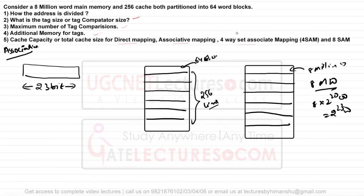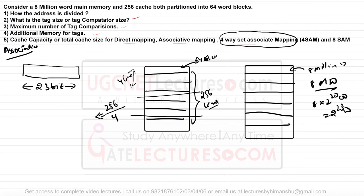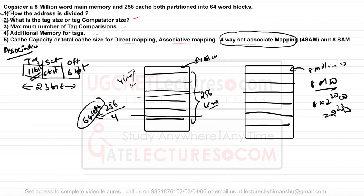For four-way set associative mapping, the cache is divided into sets of 4 lines each. With 256 lines divided by 4, we get 64 sets. The 23-bit address is divided into three parts: offset (6 bits), set number (6 bits, since 64 = 2^6), and tag (23 − 6 − 6 = 11 bits). Maximum tag comparisons = 4, since each set has 4 lines in the worst case.